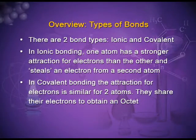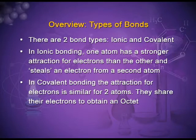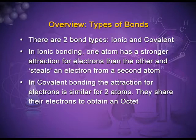Let us have an overview of the two types of bonds. In ionic bonding, one atom has a stronger attraction for electrons than the other and it steals an electron from the second atom. In covalent bonding, the attraction for electrons is similar for both atoms; they share their electrons to obtain an octet.